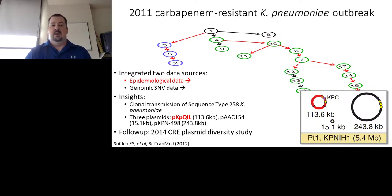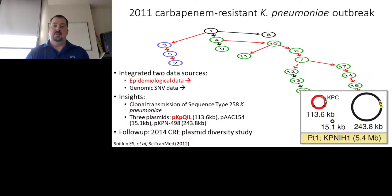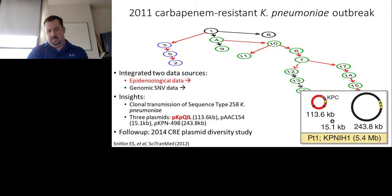We've done quite a lot of work on the cluster of carbapenem-resistant organisms from 2011. This was beautiful work done by Evan Snitkin, who was in the lab at the time. He elucidated a transmission network where a single index patient, through three separate transmissions, started a cascade of events — 19 patients in total with 18 transmissions. He used both epidemiological data, indicated by red arrows, and genomic single nucleotide variant data, in the black arrows. We determined it was a clonal transmission of sequence type 258 Klebsiella pneumoniae, with three plasmids identified using 454 sequencing: PKPQIL, PAEC154, and PKPN498.